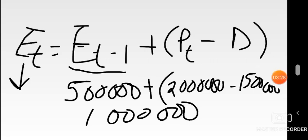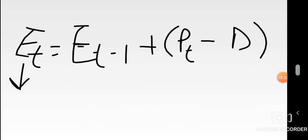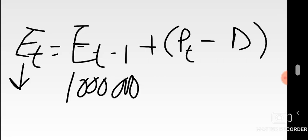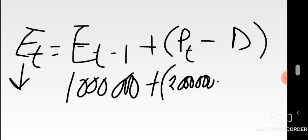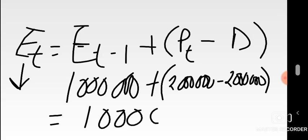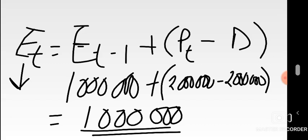Now for October — we need the closing inventory. We had to start from August because we needed each previous month's closing before calculating the next. September's closing is one million, which becomes October's opening. Planned production is two million and October's demand is also two million. Subtracting: one million plus (two million minus two million) gives one million as October's closing inventory. That's Part B.